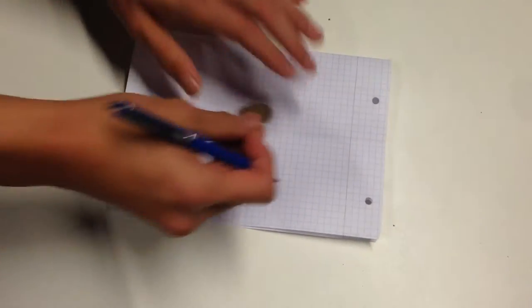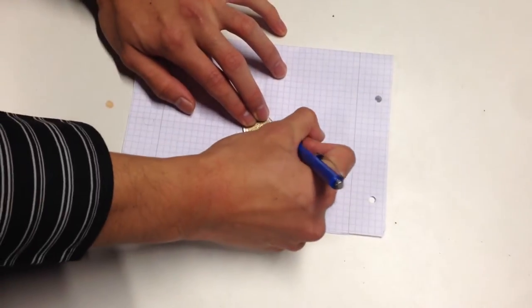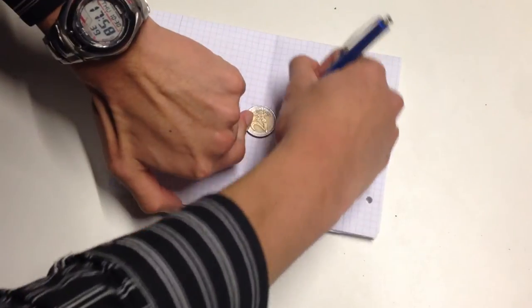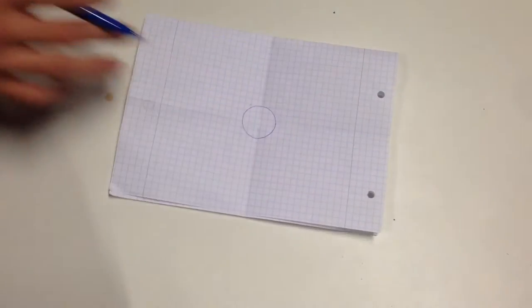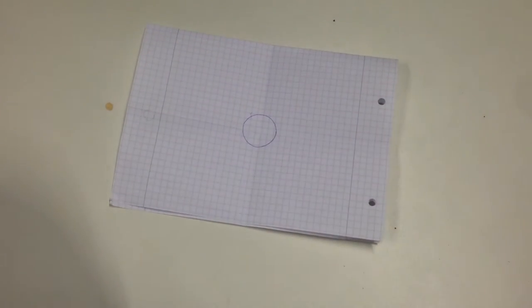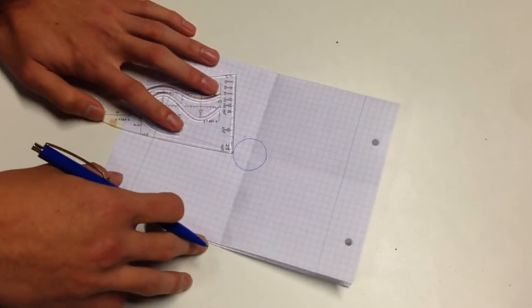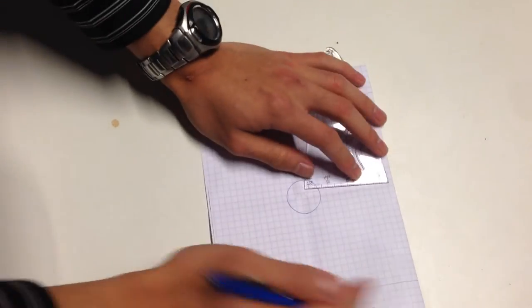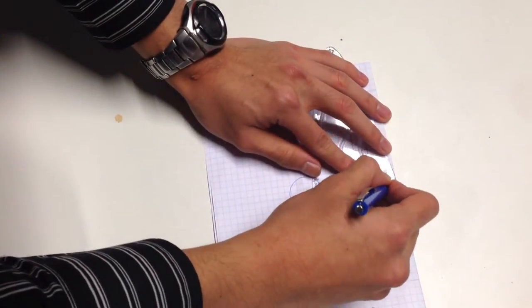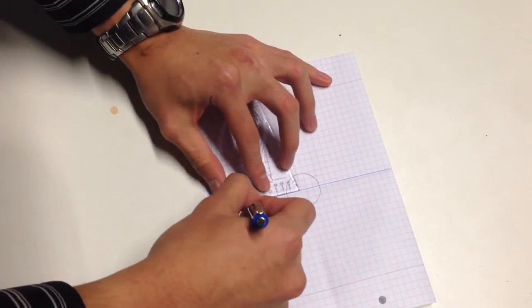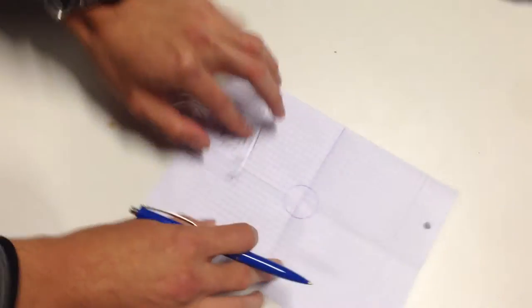And then you put a coin in the middle and then you make a circle. And then you make a line at the vertical, the center line. Like this.